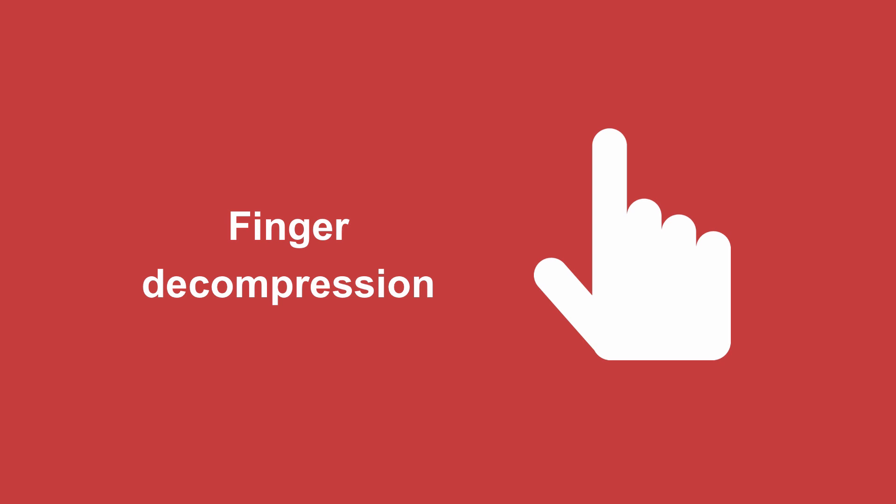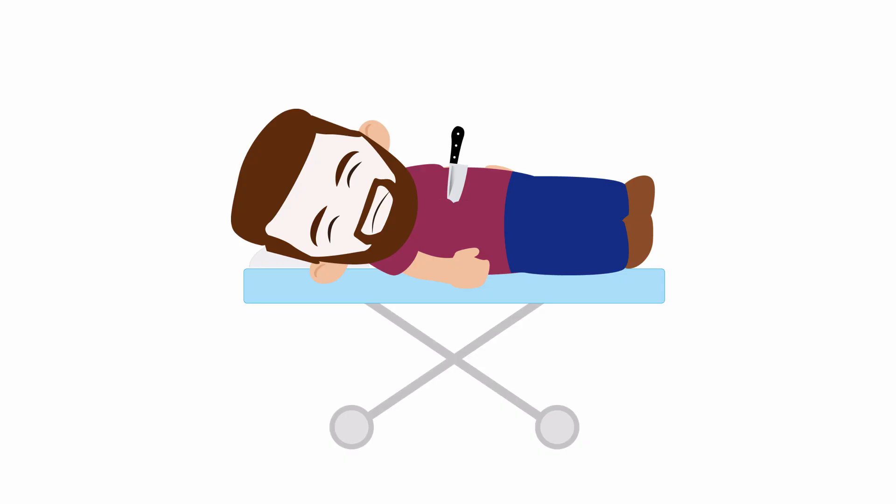Now let's talk about finger decompression. In the case of a traumatic arrest where someone was either stabbed or was in a car accident or fell from height and they lose their pulses in front of you, a rapid technique called finger decompression can provide both therapeutic and diagnostic results. The procedure essentially involves performing a rapid chest tube without the tube.